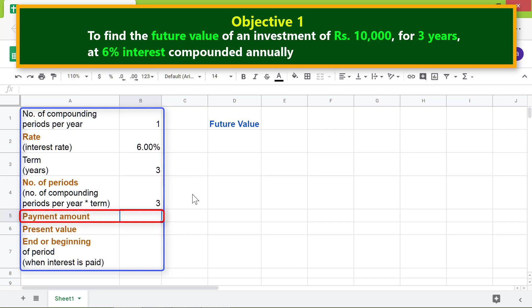For the payment amount, type 0 because of the lump sum investment. For the present value, type minus 10,000 because this amount is the cash outflow. For end or beginning, type 0 assuming payment is due at the end of the period.